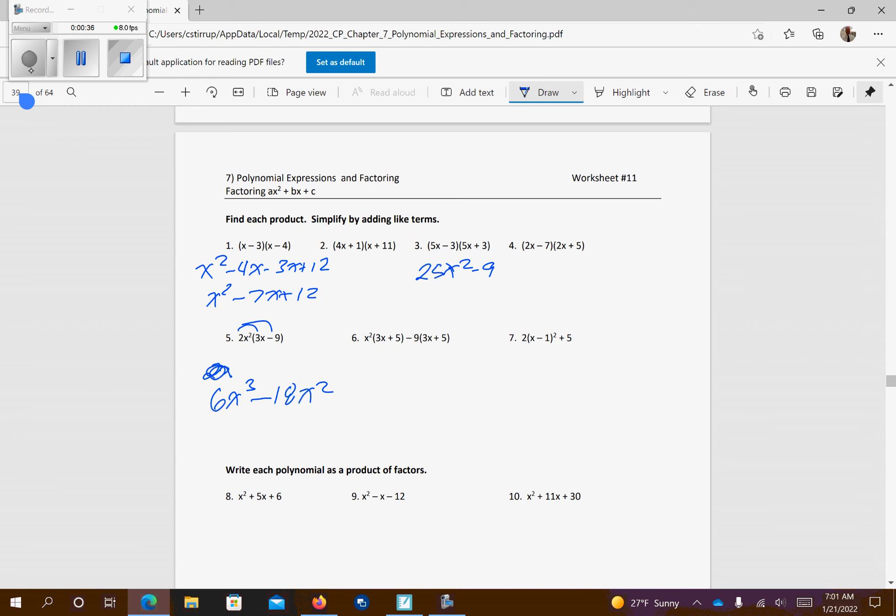On this one, a little tougher, so we have to realize that x minus 1, we have 2 of them because it's raised to the second power. So I'm going to go ahead and multiply this together first, I still have the 2, so that's x squared minus 1x, minus 1x plus 1, and then we have that plus 5 to come down.